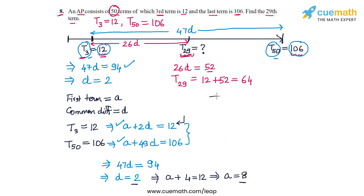And now to calculate T29 we can simply use the relation for the nth term. So that's A plus 28D. Let's plug in the values for A and D. A is 8 and D is 2, so 28 into 2 is 56. 56 plus 8 is 64. So this answer is what we got earlier also.